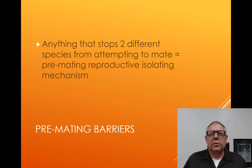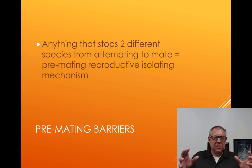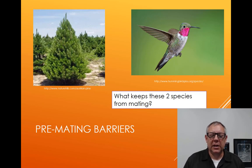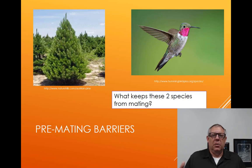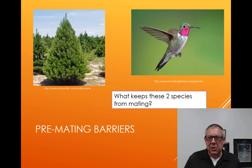Pre-mating and post-mating isolating mechanisms are pretty much what they sound like. Anything that stops two different species from even attempting to mate is a pre-mating reproductive isolating mechanism — the two don't even try. For example, here we've got two completely different organisms. The parts don't match up, and they recognize they don't even appear similar. These are kept as separate species because they never try to reproduce.